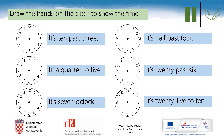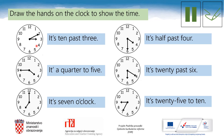Shall we check the answers? Here we go. The first clock — it's ten past three. Check the hands. The next one — it's a quarter to five. It's seven o'clock. It's half past four. Check the hands. Then it's twenty past six. And the last one — it's twenty five to ten.